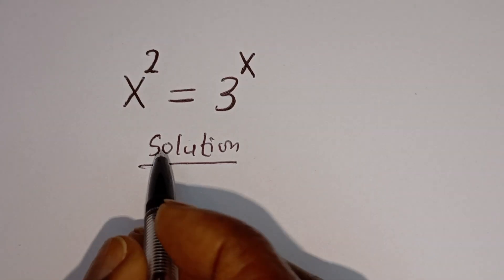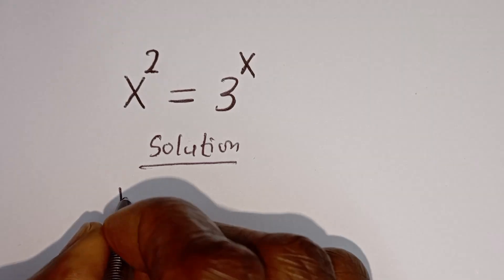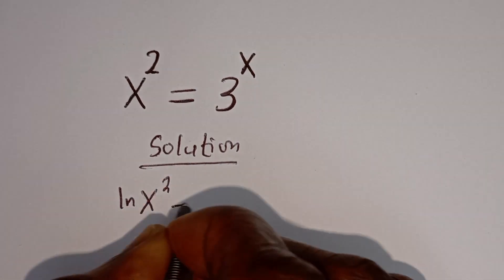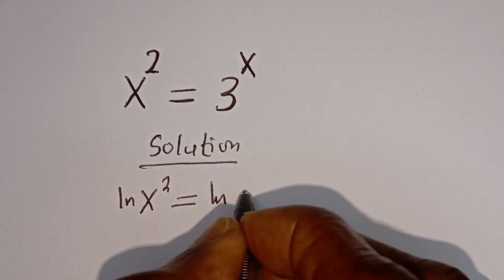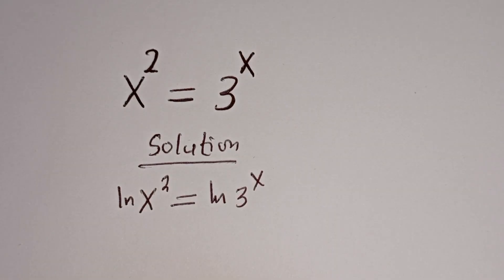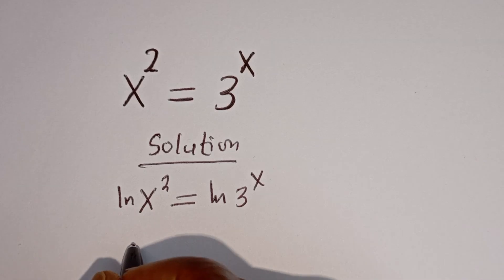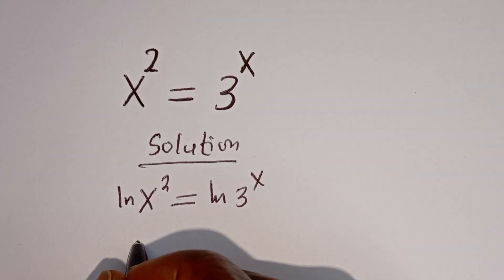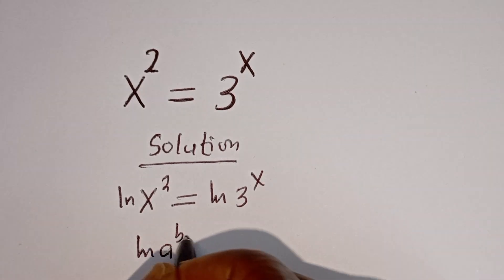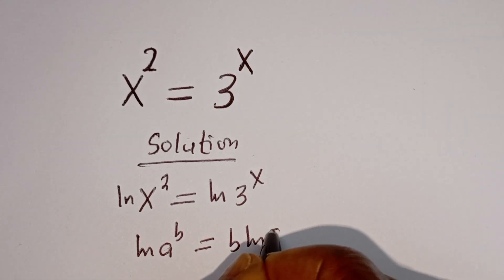Now from here, let's take the natural log of both sides of this equation. ln of x squared is equal to ln of 3 to the power of x. Now, if you have ln of a to the power of b, this is equal to b times ln of a.